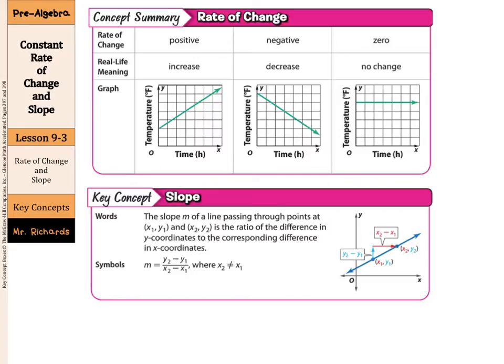Well, the slope m of a line passing through the points at (x₁, y₁) and (x₂, y₂) is the ratio of the difference in the y-coordinates to the corresponding difference in x-coordinates. So, what you're going to do to find slope and slope in algebra and, well, pre-algebra as well is always defined by the letter m and that's going to equal y₂ minus y₁ over x₂ minus x₁ as long as the two x's are not equal to each other and we'll get into a few examples of that now.